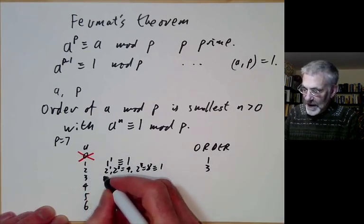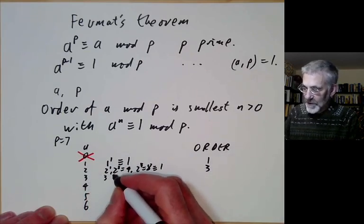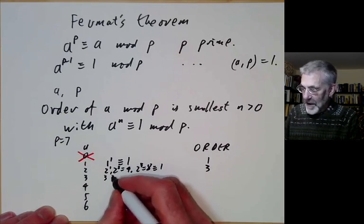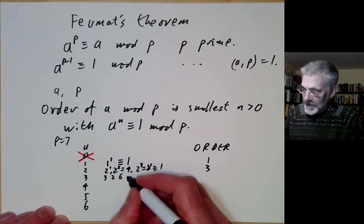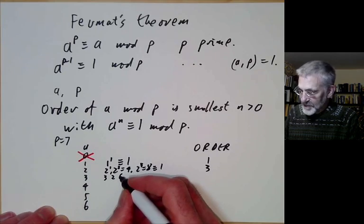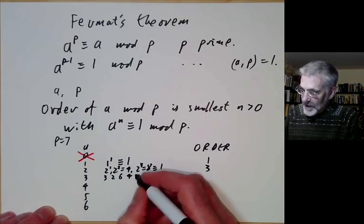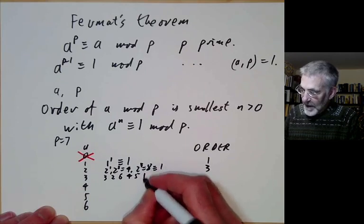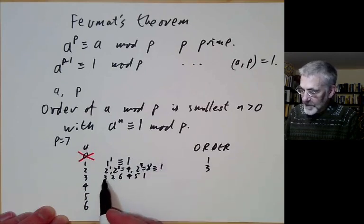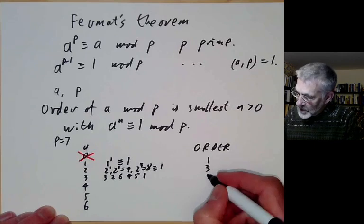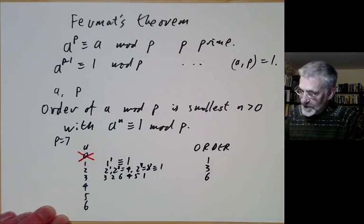If we take 3, we look at the powers: 3 squared is 9 which is congruent to 2, then 3 cubed is congruent to 6, then we get 4, then 5, and then finally 1. So 3 to the powers 1, 2, 3, 4, 5, 6 gives 1. So the order is 6.